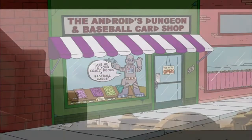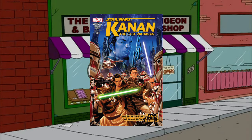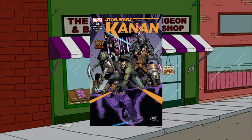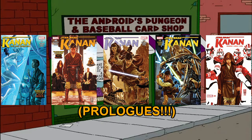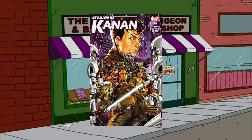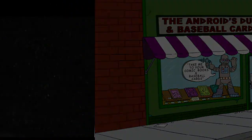And then we have some more comics of a different series. It's time to go back to Kanan: The Last Padawan, reading Issue 1 the prologue, then Issue 5 the epilogue, and then the entirety of Issue 6, followed by the prologues of Issues 7 to 11, and then the epilogue of Issue 11, followed by the entirety of Issue 12. And then we're back to the Star Wars Rebels TV series again, for Season 1 Episode 7.